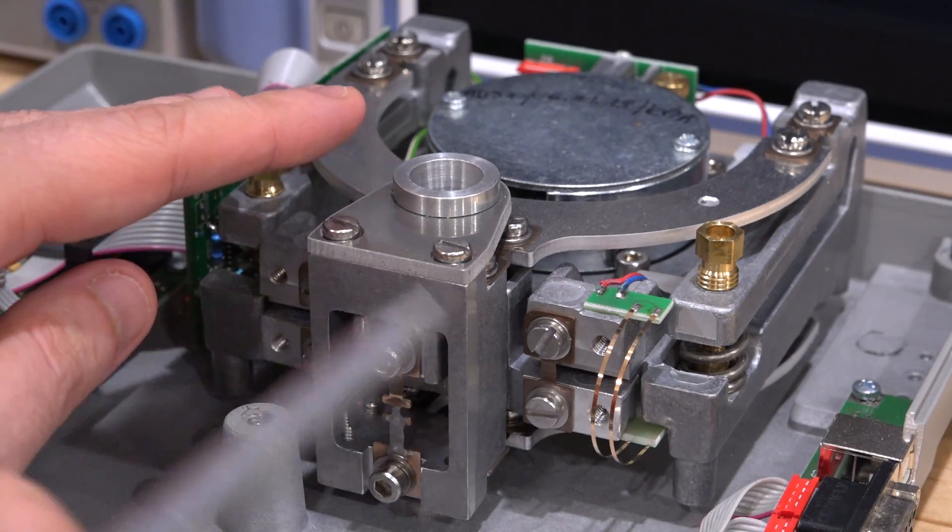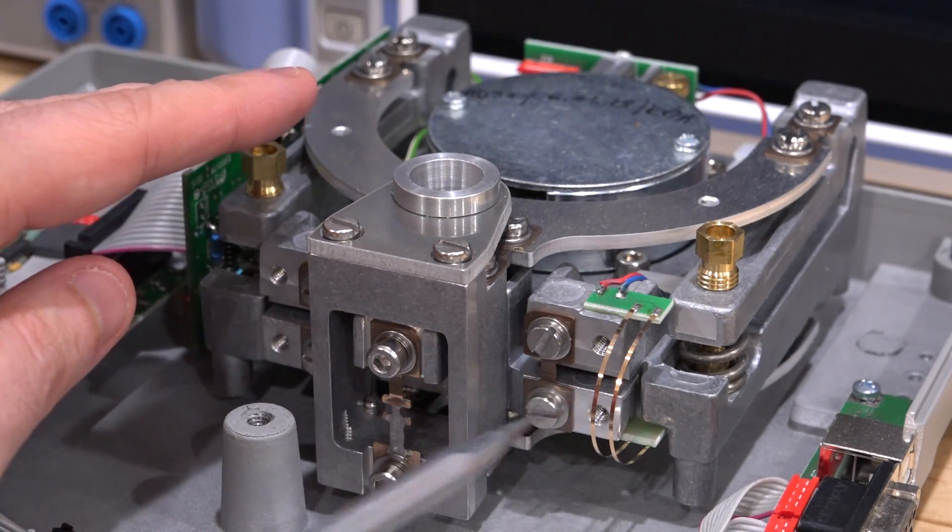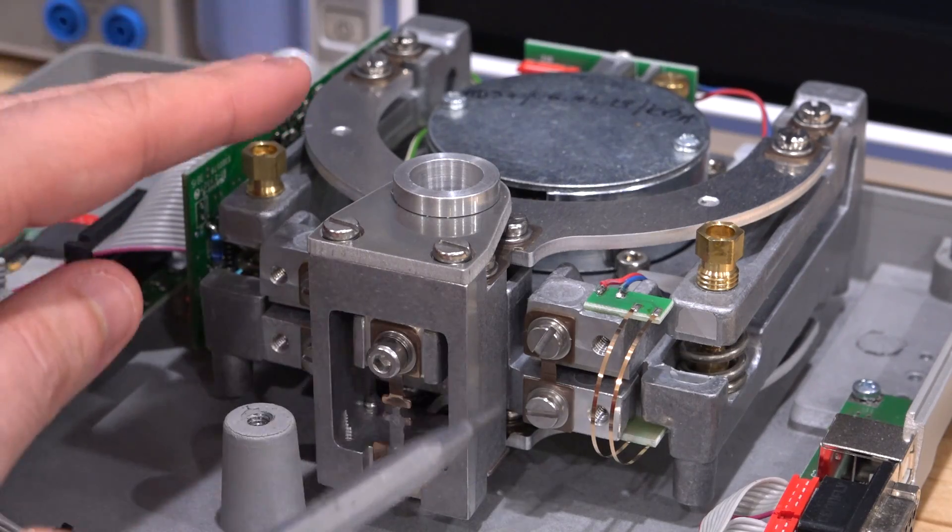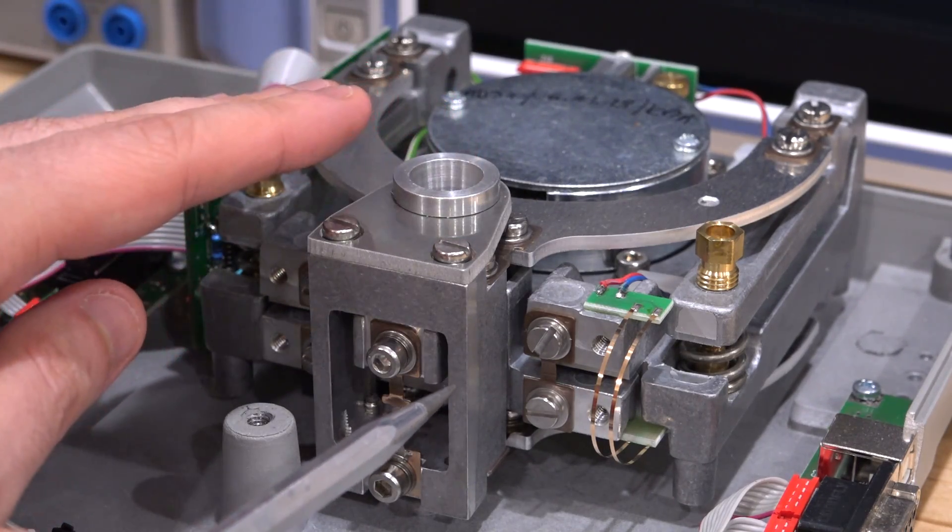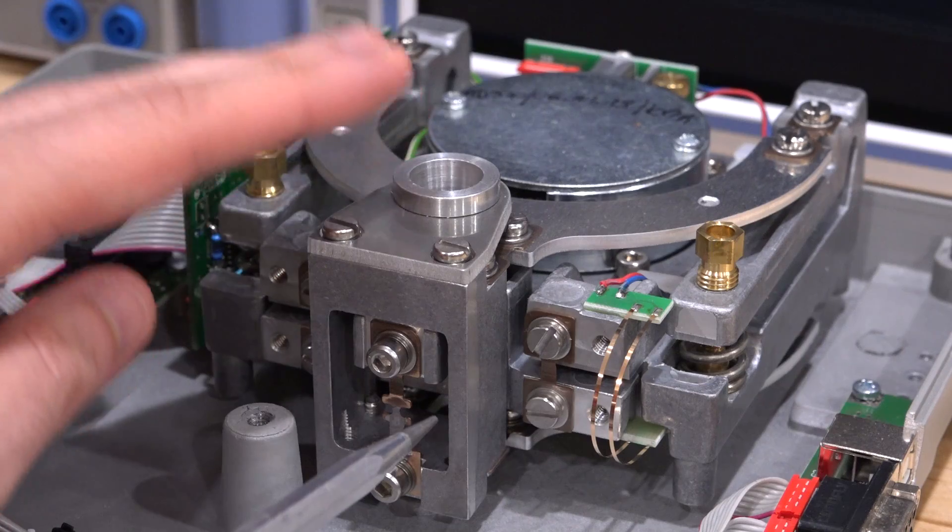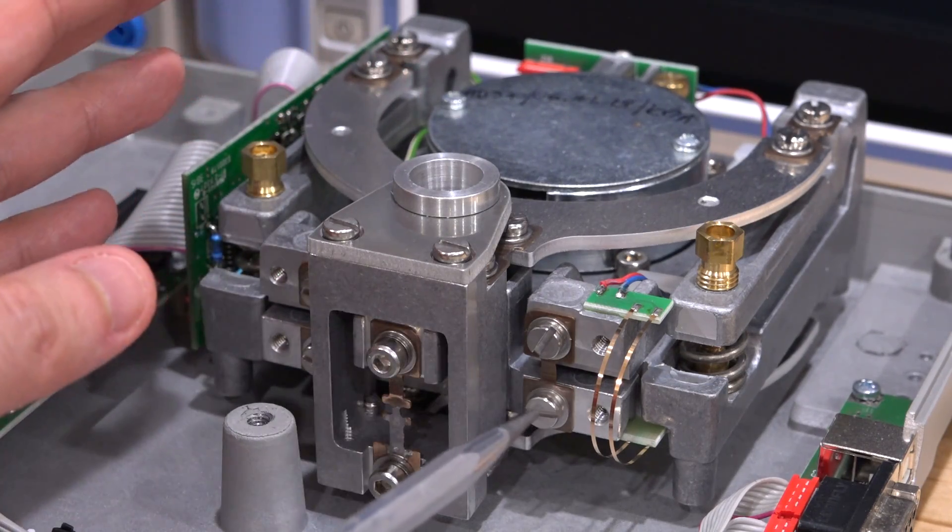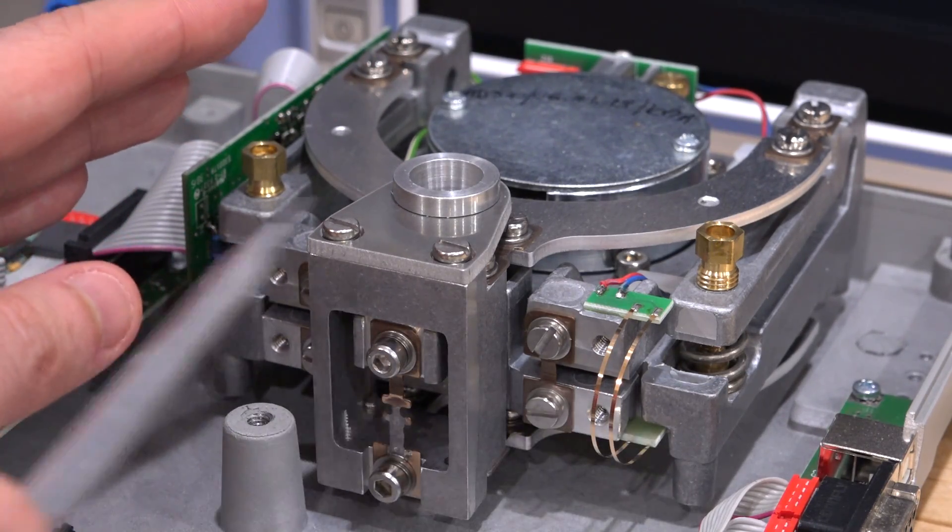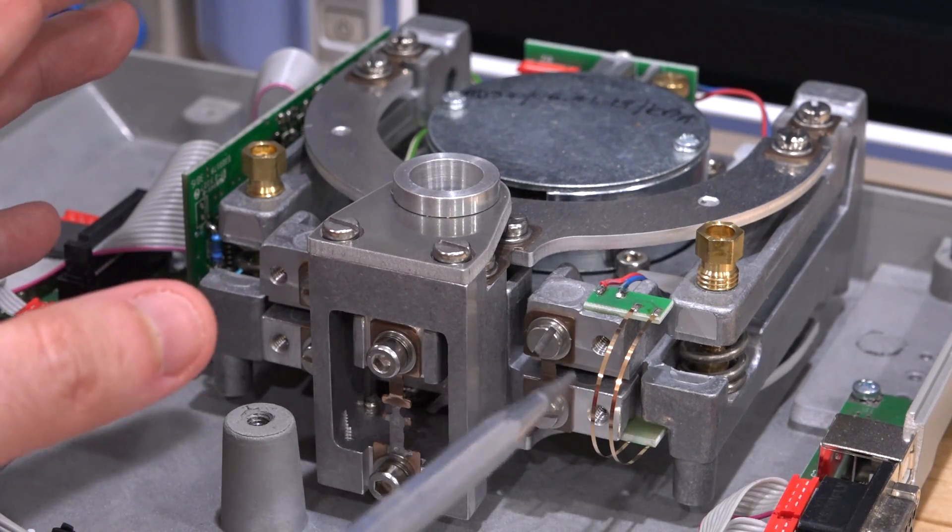And the instrument needs to then adjust the magnetic field to compensate for that and bring this back into the middle. The change in the PID parameters that controls the loop, of course, that's proportional to the weight, the force that's being applied on this, and that's what's digitized and ultimately correlated with whatever you put on top of this.